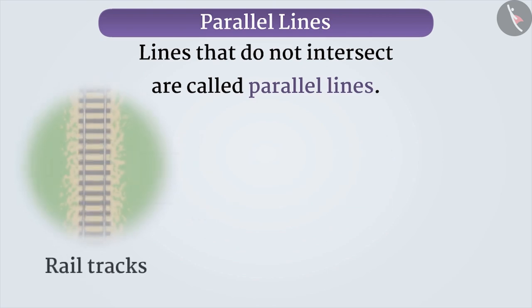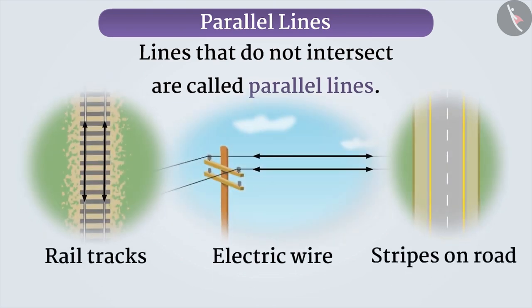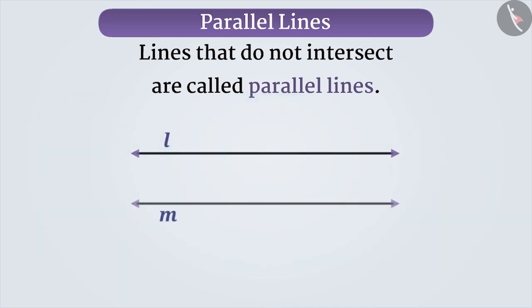Such as rail tracks, electric wires, roadside or stripes made on it, etc. When two lines are parallel, we denote it as shown. And remember that the distance between the two parallel lines is always the same.